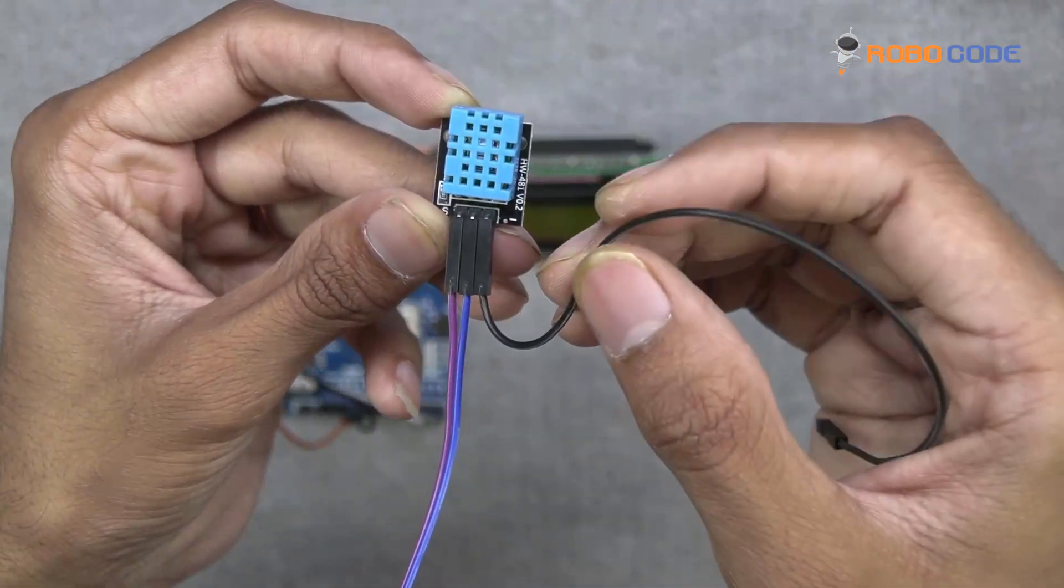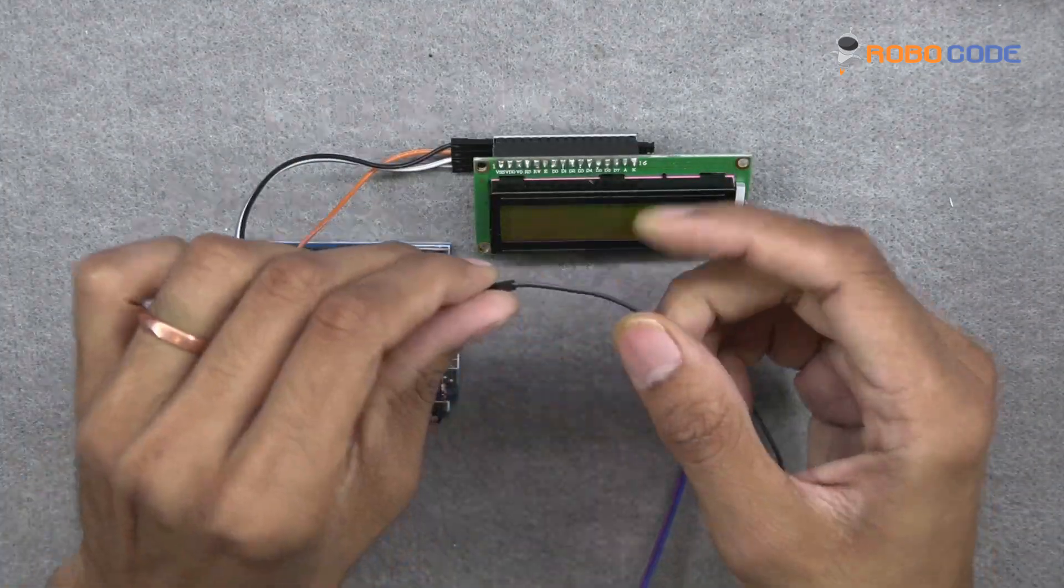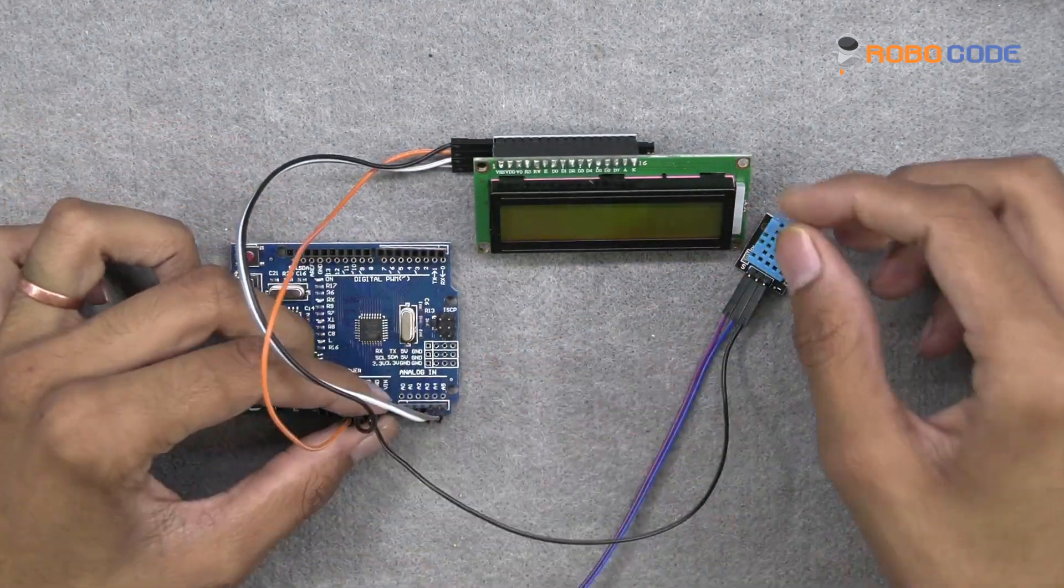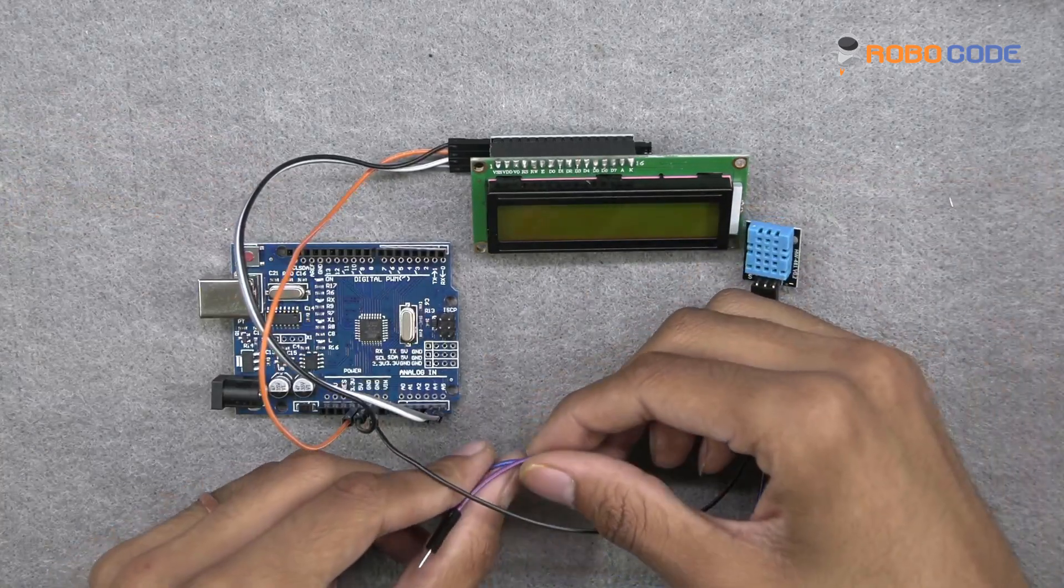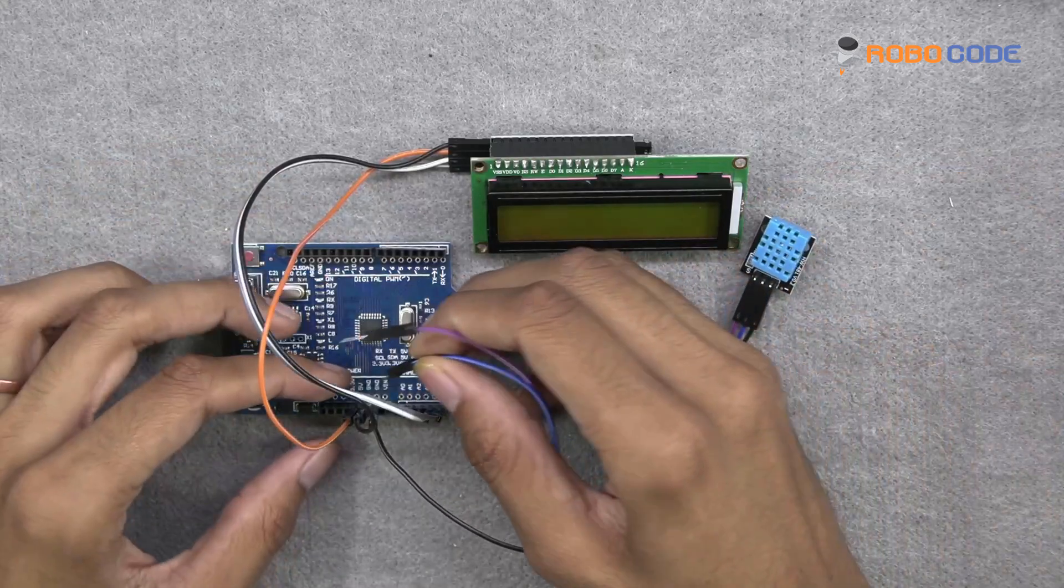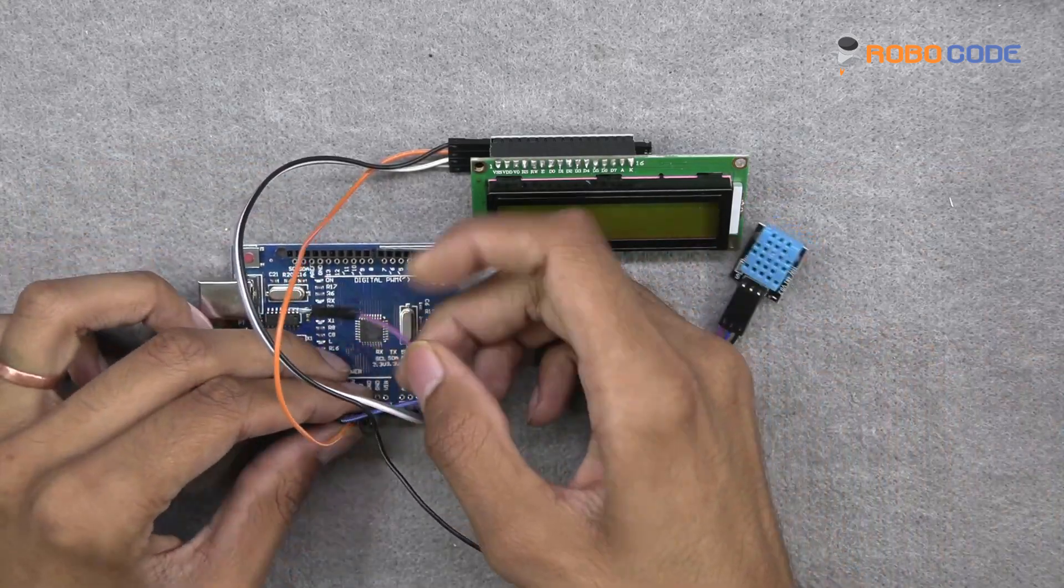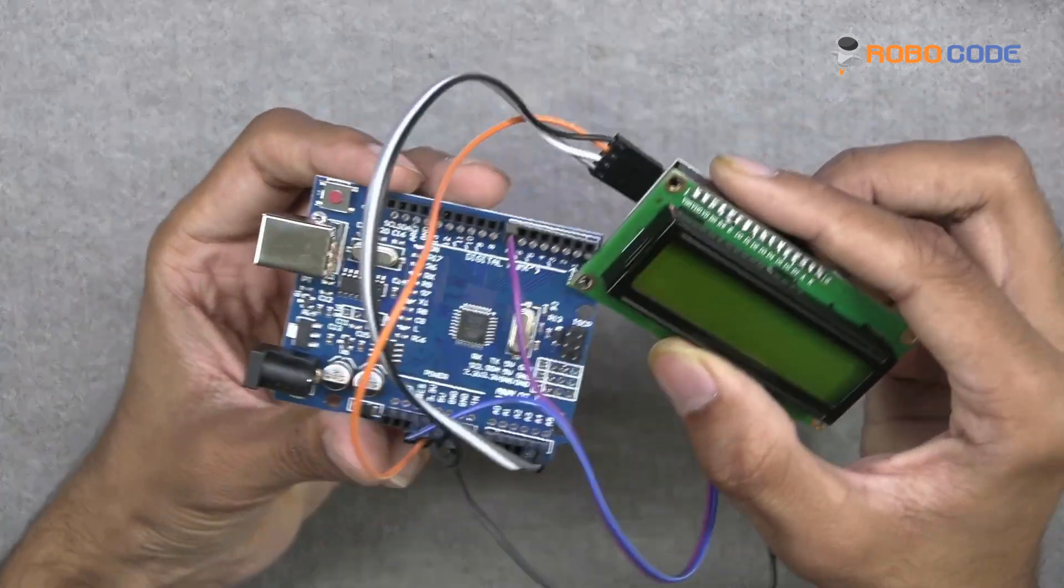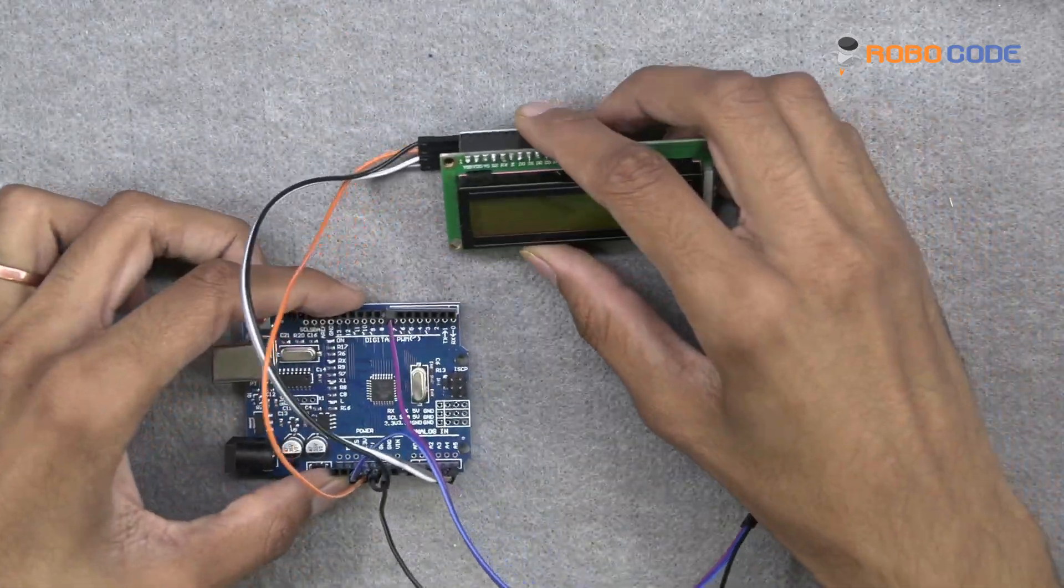We will take the black wire and insert it in the ground on the Arduino UNO side, and the remaining two wires, which are blue and purple, on 3.3V and the purple wire on pin number 7, as you can see.